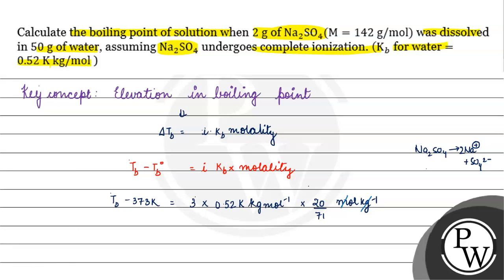3 into 0.52 into 20 by 71. 20 by 71 is basically 0.52 into 3 into 0.2817. If we multiply 3 and 0.52, we have 0.44 Kelvin.